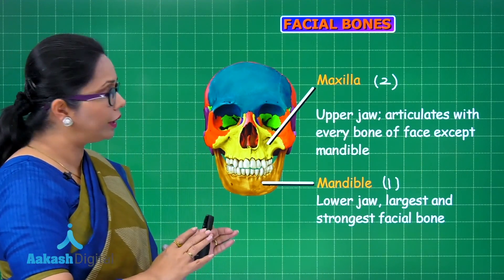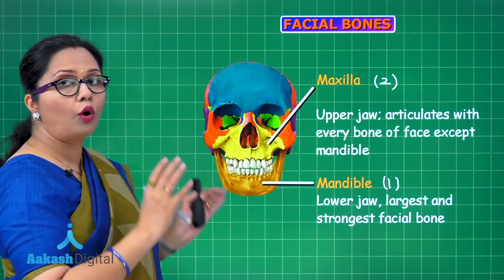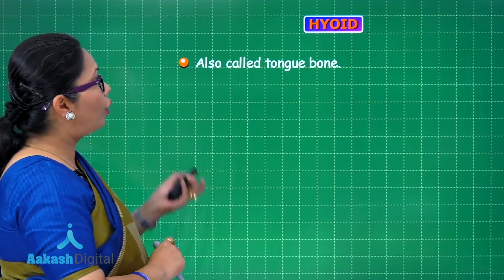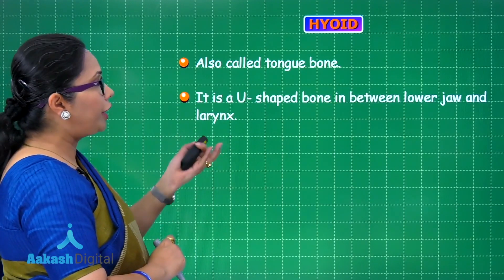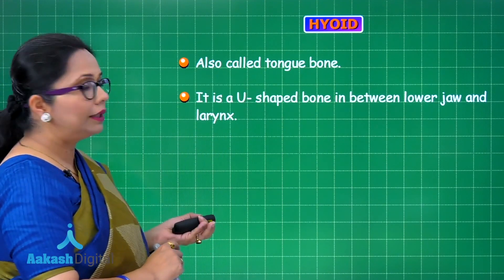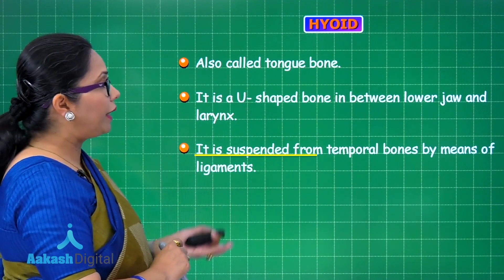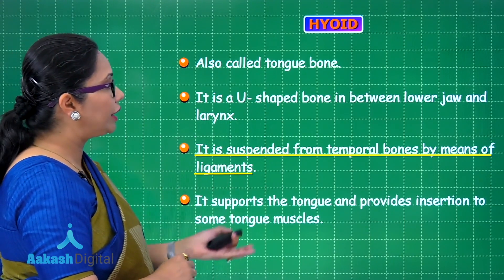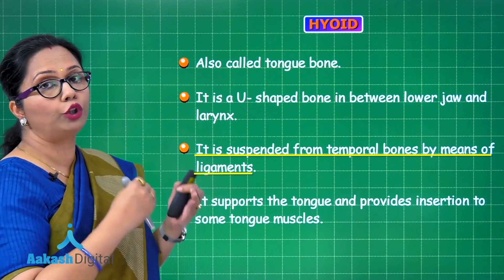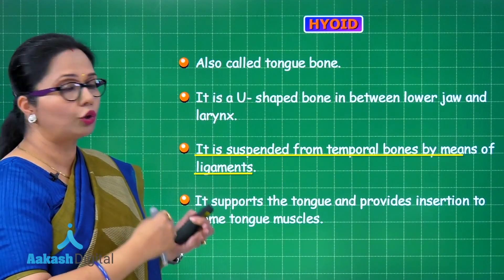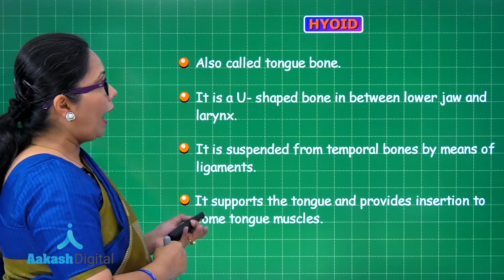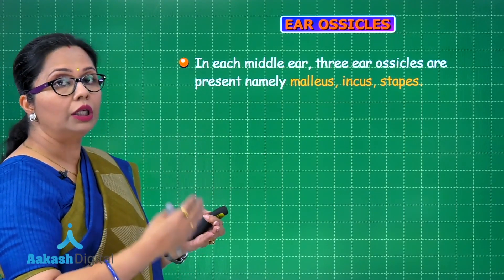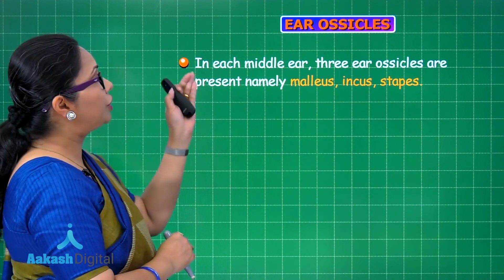Two more structures are associated with the skull but not directly counted as skull bones: the hyoid and the ear ossicles. The hyoid, also called the tongue bone, is a single U-shaped bone located between the lower jaw and the larynx. It is suspended from the temporal bones by ligaments and supports the tongue, also providing attachment sites for tongue muscles.